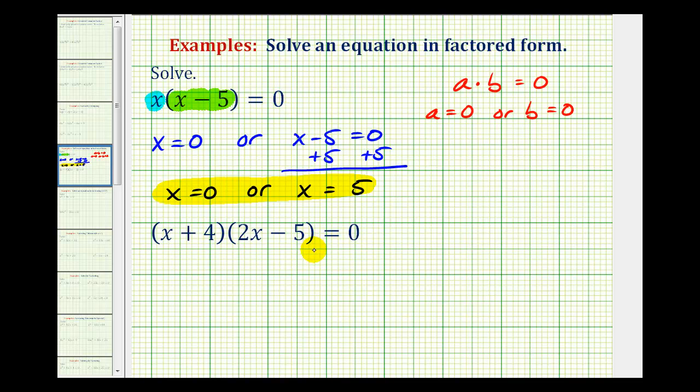So for our second example, we have the quantity x plus four times the quantity two x minus five equals zero. Since this product is equal to zero, either x plus four must equal zero or two x minus five must equal zero.